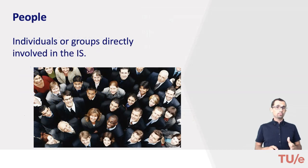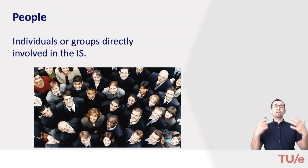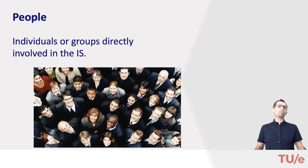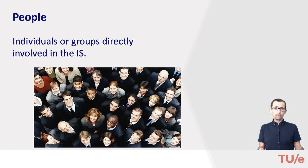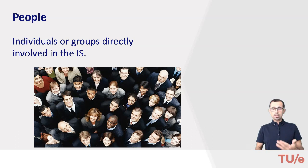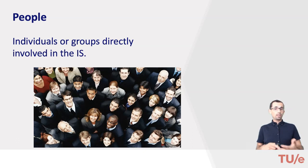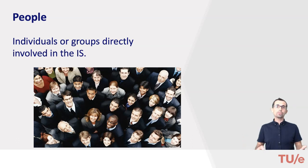The third component is people — those individuals or groups directly involved in the information system: users, managers, IT professionals, and so on. In a modern organization this simply means almost all employees. A good understanding of the people involved, including their skills, interests, and motivations, is necessary when designing, implementing, and managing a new information system, or when troubleshooting an existing system that's not performing as expected.